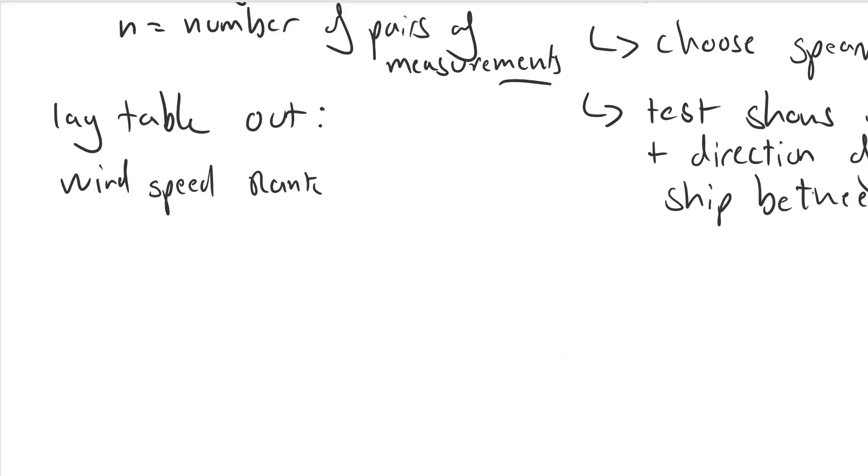We'd write out wind speed, rank it, then do percentage cover of marram grass, rank that, do the difference between the ranks and then the difference between the ranks squared. Then add them all up to be used in the test.